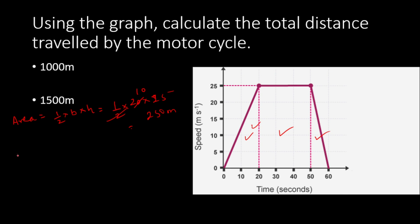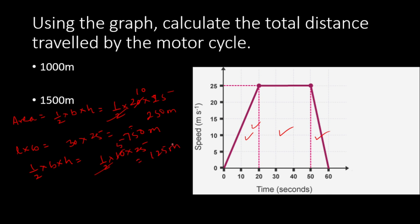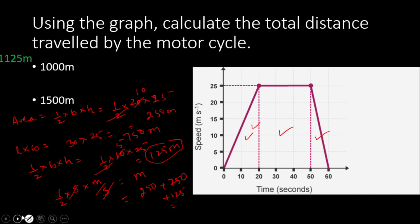For the second part (rectangle): area = length × breadth = (50 − 20) × 25 = 30 × 25 = 750 metres. The last section is again a triangle: ½ × base × height = ½ × 10 × 25 = 125 metres. The unit works out to metres because base is in seconds and height is in metres per second — the seconds cancel, leaving metres.